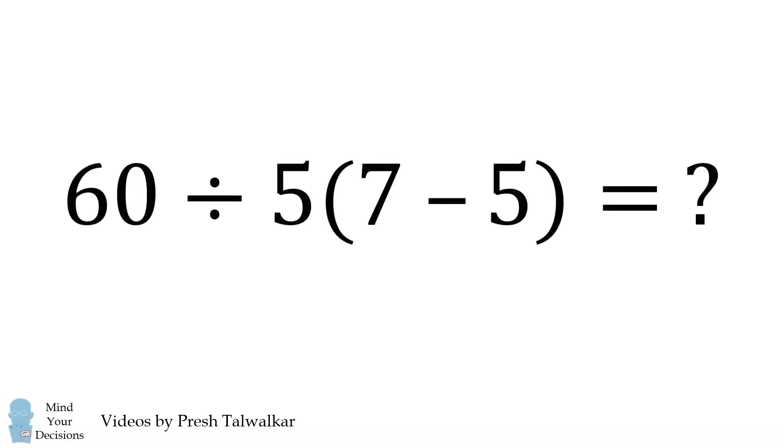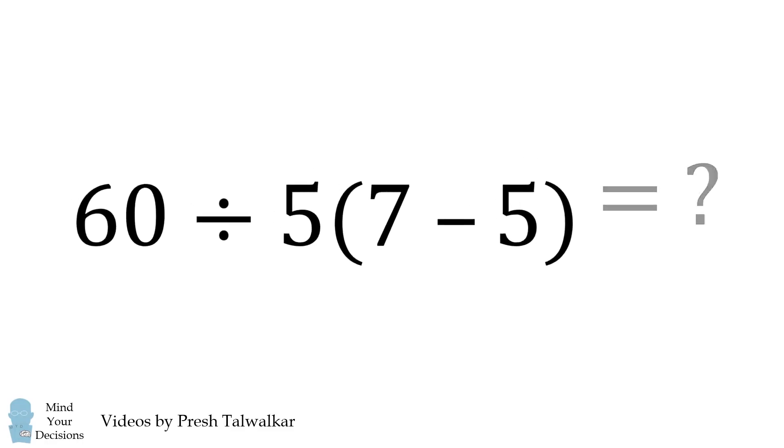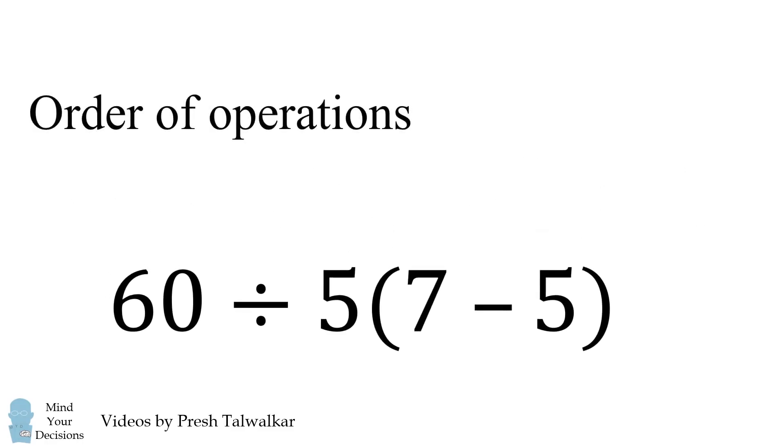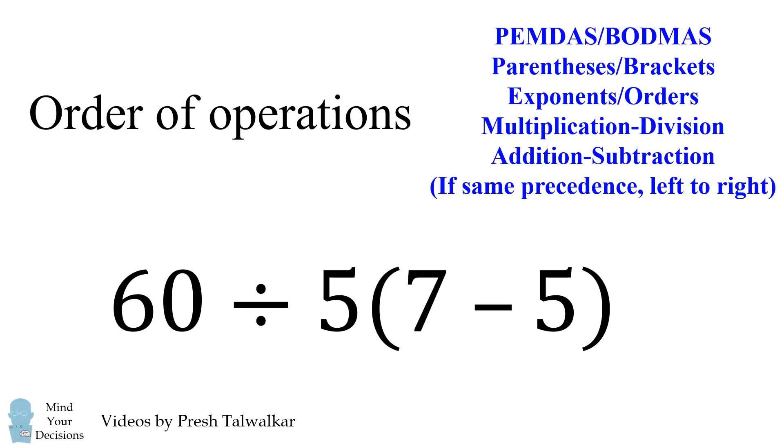The problem is 60 divided by 5 parentheses 7 minus 5. What is this equal to? We'll solve this using the order of operations. This is commonly referred to as PEMDAS or BODMAS. It refers to the precedence of operations. We first have parentheses or brackets, then exponents or orders, then multiplication and division, and finally addition and subtraction. If you have multiple operations of the same precedence, you should evaluate them from left to right.